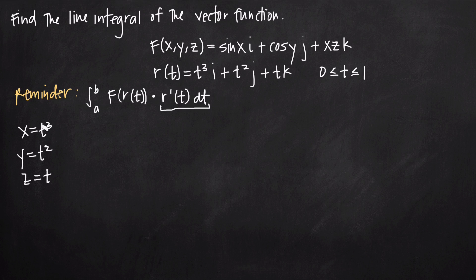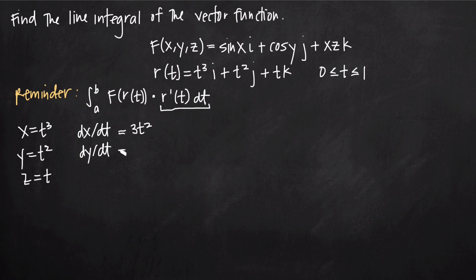We're also going to need the derivatives of x, y, and z in terms of t. So dx/dt = 3t² (the derivative of t³), dy/dt = 2t (the derivative of t²), and dz/dt = 1. Our next step is to plug these values into f to get the function in terms of t instead of x, y, and z.